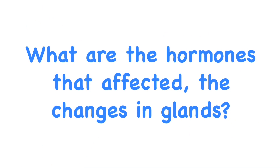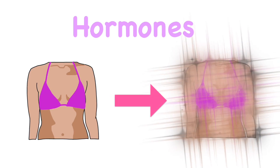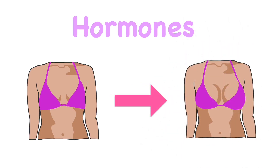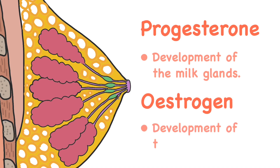Now we move to the chemical process of the mammary gland. What are the hormones that affect the changes in the glands? During pregnancy, the female breast increases in size due to the development of the milk glands and ducts. Development of the milk glands is controlled by progesterone, and development of the ducts is controlled by estrogen.